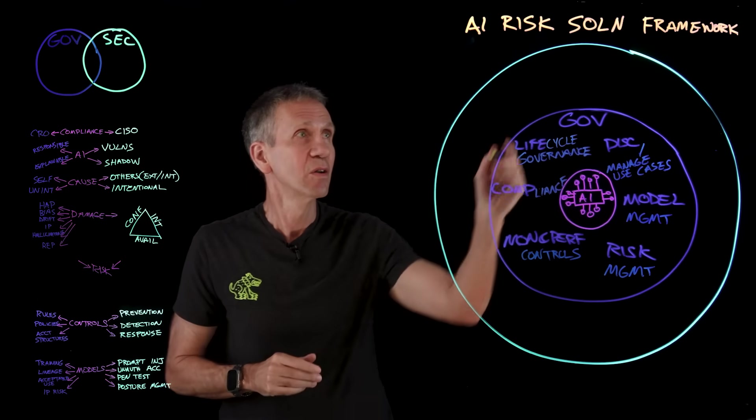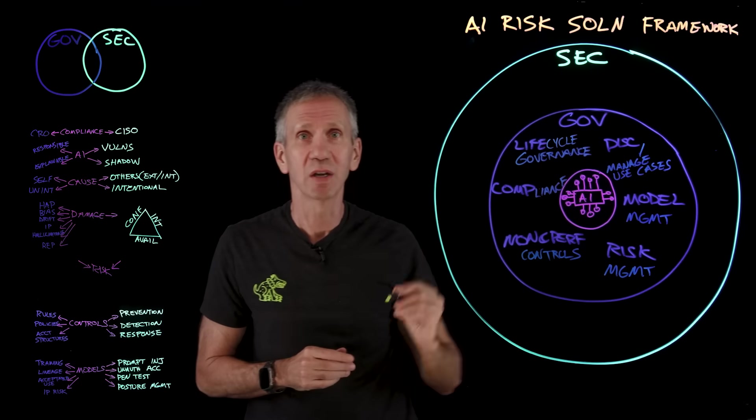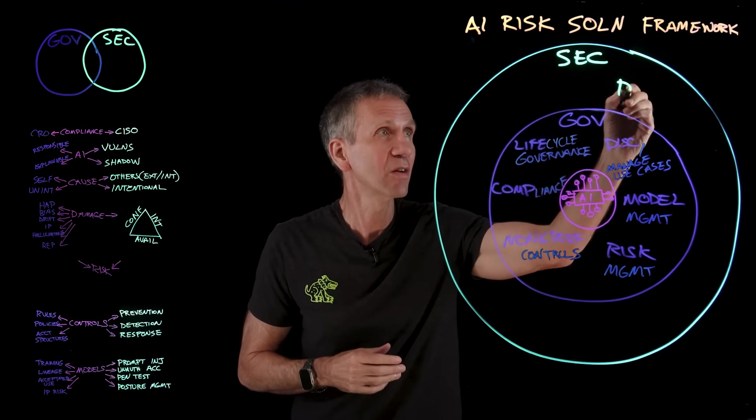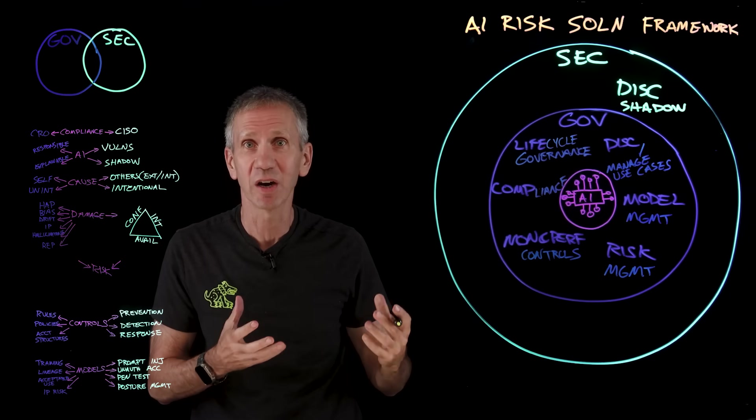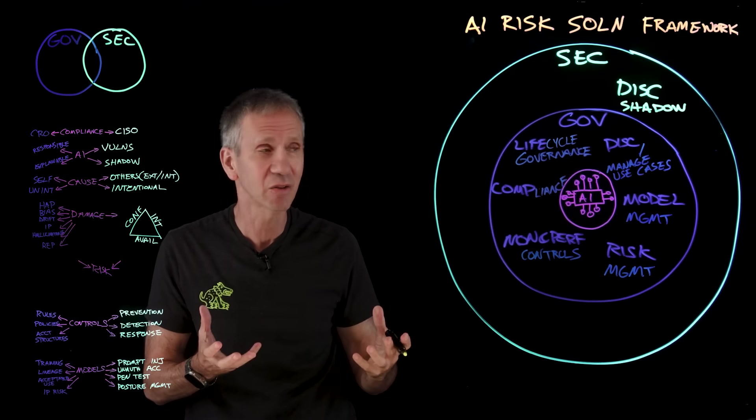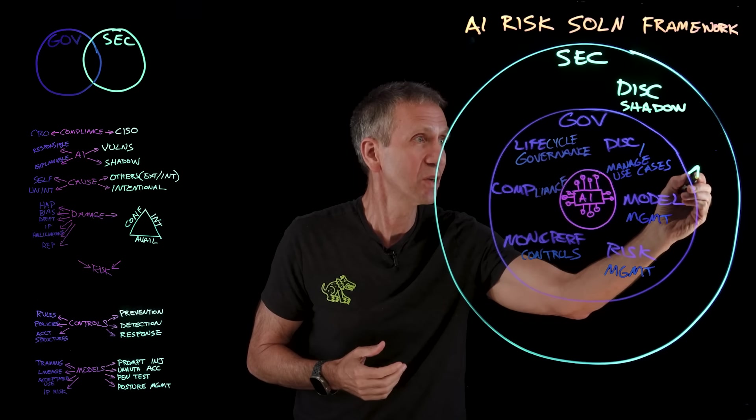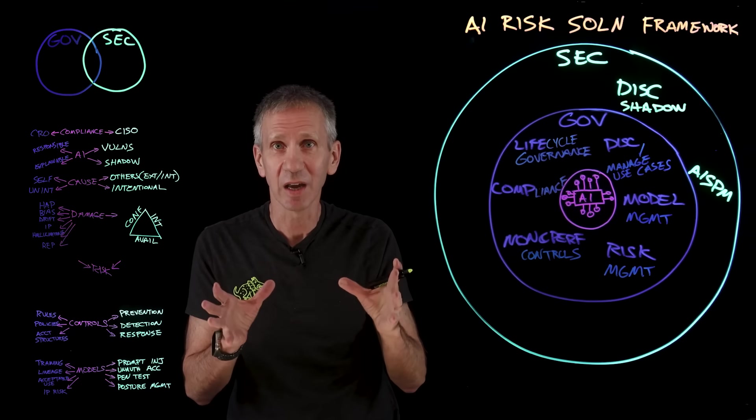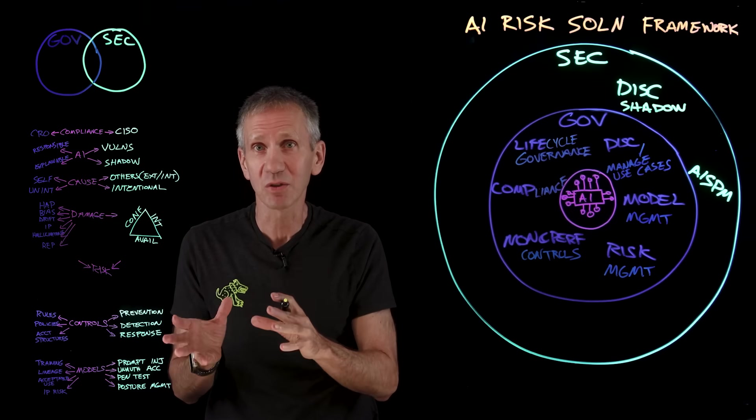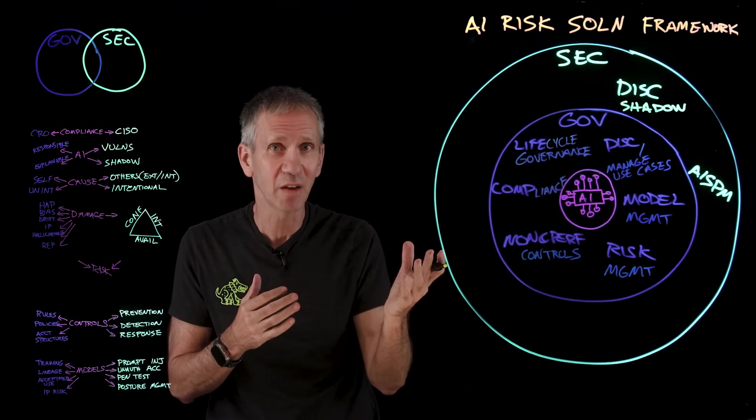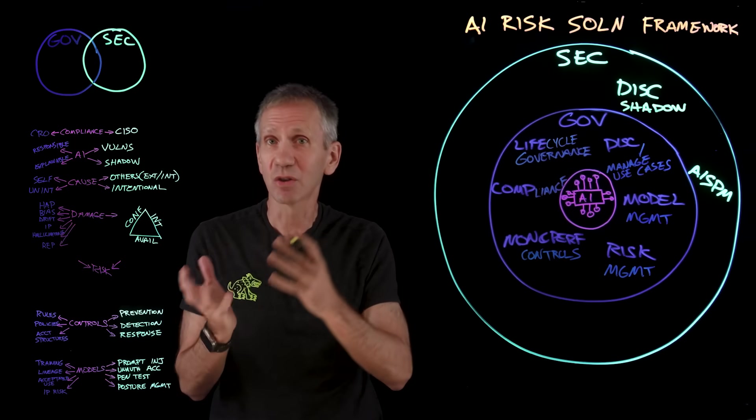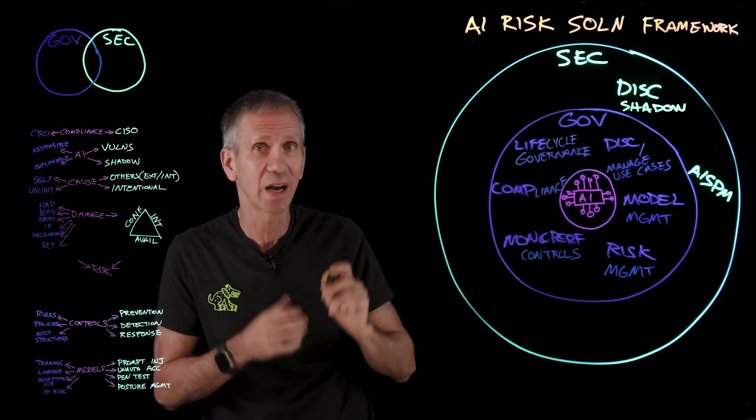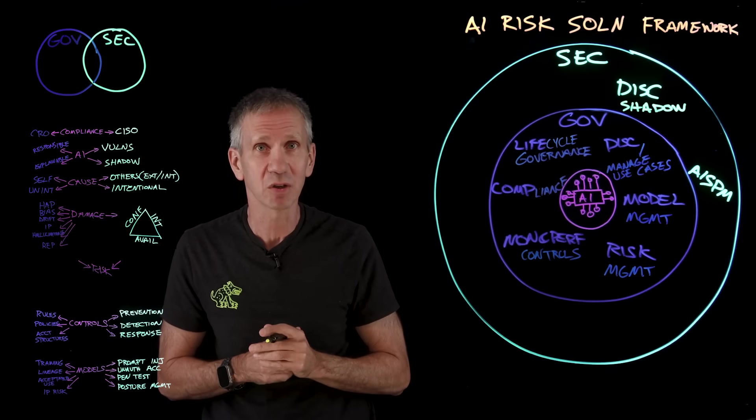Around that layer, we add the security protections that are necessary. I was talking about discovering AI use cases. How about we discover the AI models that are out there in our environment, especially the shadow AI. And once I've discovered it, I need to do this thing we call AI security posture management. That is a way to guard against misconfigurations, to lock down and make sure that the security policy for a particular system is being followed.